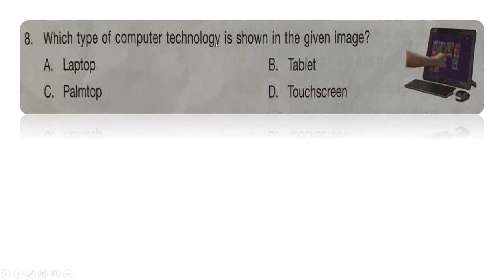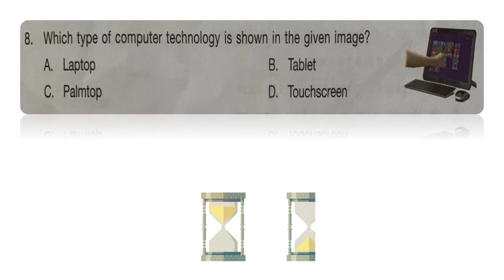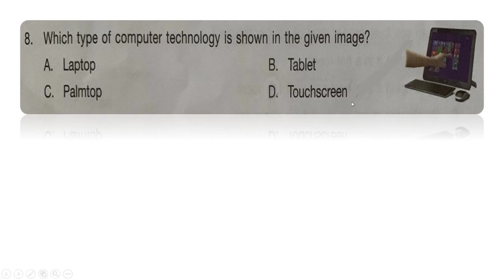Next question: which type of computer technology is shown in the given image? Options are A: laptop, B: tablet, C: palm top, or D: touch screen. The right answer is touch screen, because options A, B, and C are devices — not technologies. Touch screen is a computer technology that allows you to interact with the screen using a finger touch.